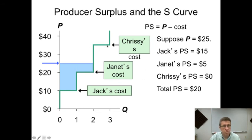The reason Chrissy isn't going to sell the product: at a price of twenty-five, Chrissy won't sell her service or product. She needs at least thirty-five dollars. Producer surplus will then be the total of Jack's producer surplus and Janet's producer surplus—fifteen plus five, twenty—represented by that shaded area on the graph.